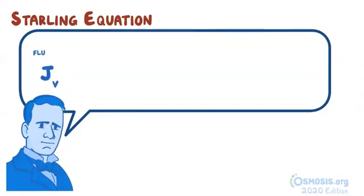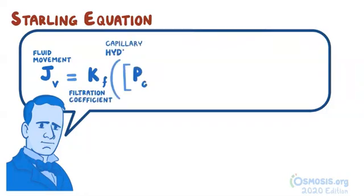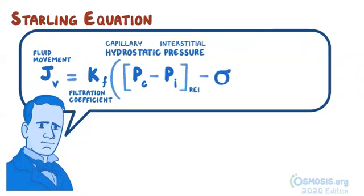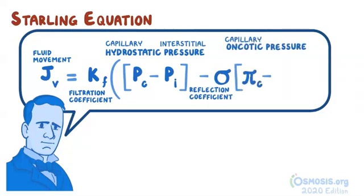Where JV is fluid movement, KF is the filtration coefficient. Pc is capillary hydrostatic pressure. Pi is interstitial hydrostatic pressure. Sigma is reflection coefficient. Pi c is capillary oncotic pressure. And pi i is interstitial oncotic pressure. The equation simply states that there are two types of forces acting within and outside the capillaries, which determine fluid movement.